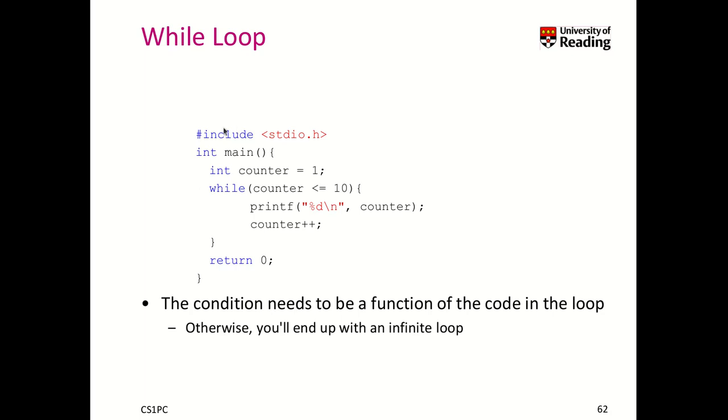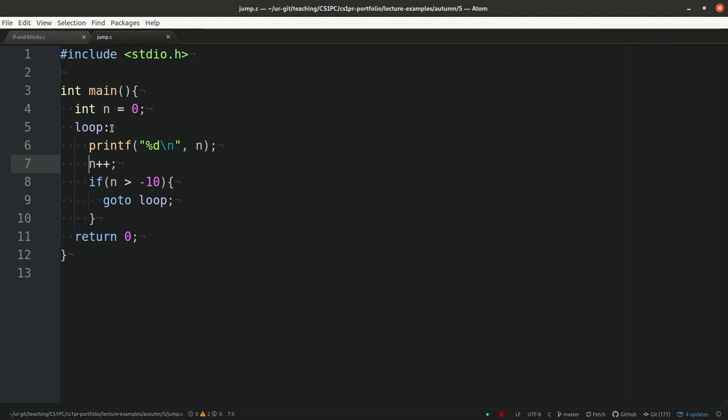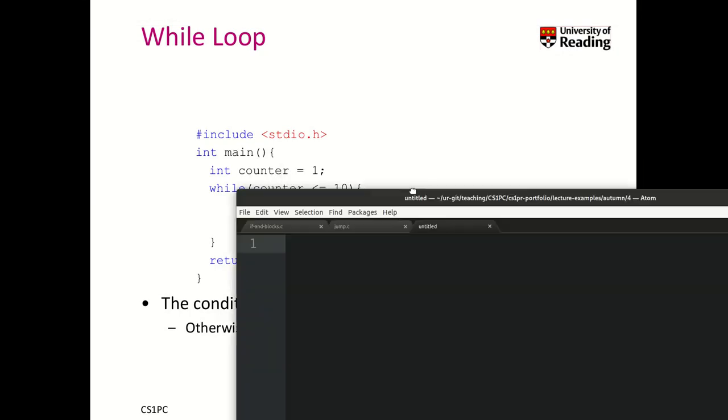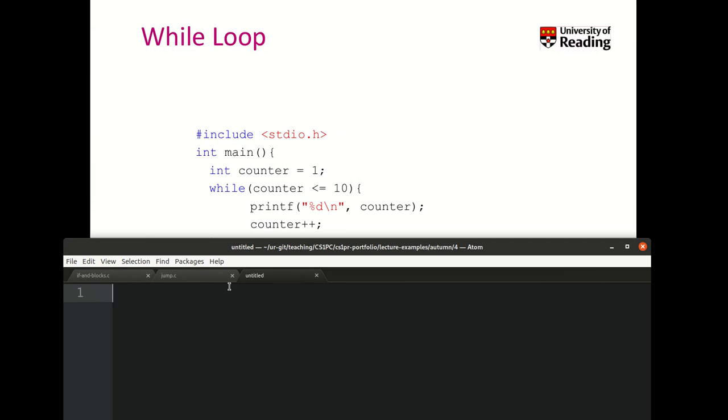Here is an example now. We set a counter to 1. And we say as long as the counter is smaller or equal to 10, you print the counter. And then we increment the counter by 1. Think a moment by yourself what this code does. Yes, it's very similar to what we have done with our go-to statement here, where we looped from 0 to 9. Now we want to loop from basically 1 to 10. Let me briefly copy the code for you and execute it.